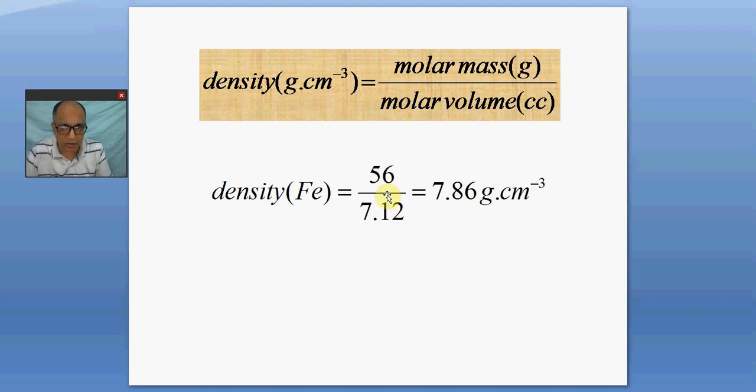For example, iron has a molecular mass of 56 grams, the gram molar mass. And its molar volume is 7.12 cm cubed. So hence the density of iron is 7.86 gram per cc. Or if you make it kg per meter cube, then you have to multiply by a thousand. So in chemistry, we are more familiar with the unit gram per cc.